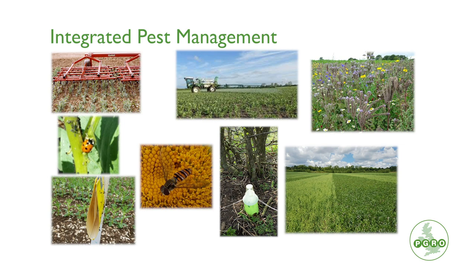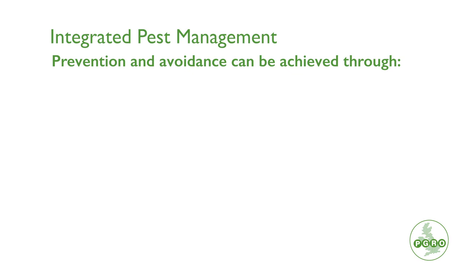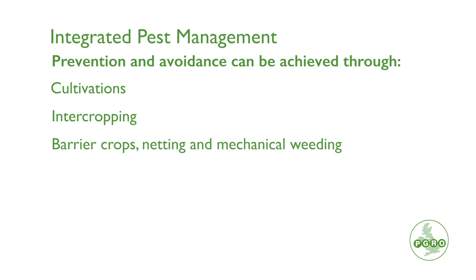There are many ways of managing pests, diseases and weeds in crops before we get to the chemical options. Some of those avoidance or prevention techniques might include cultivations and rotations. We can use biological and cultural techniques such as intercropping or field margins to encourage beneficial insects.